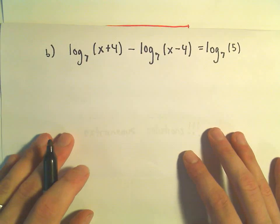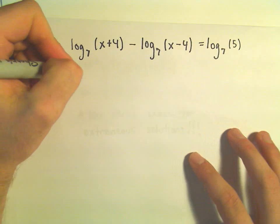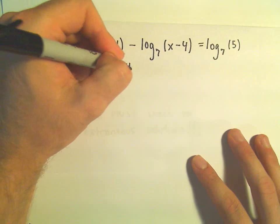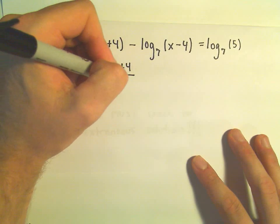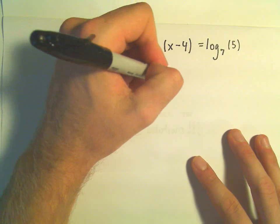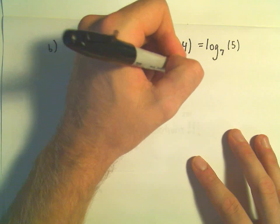So the first thing I'm going to do is rewrite the left side as a single logarithm. And we can write that by saying log base 7 of the first part. And since it's subtraction, this will give us division. On the right side we just have log base 7 of 5.